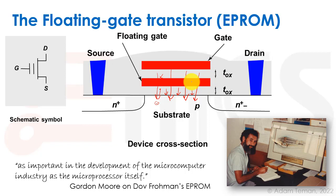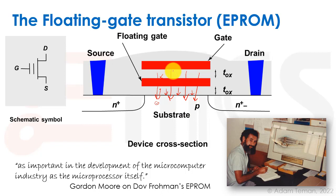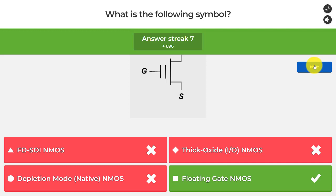In the original EPROM, UV light was needed to remove the stored charge — not possible inside a computer. The follow-up, the EEPROM (electrically erasable programmable ROM), enables erasing electrically via Fowler-Nordheim tunneling by reversing the charge direction without removing the device. That is essentially how flash works today. The floating gate NMOS has been the workhorse of non-volatile memories for the last 30 to 40 years.